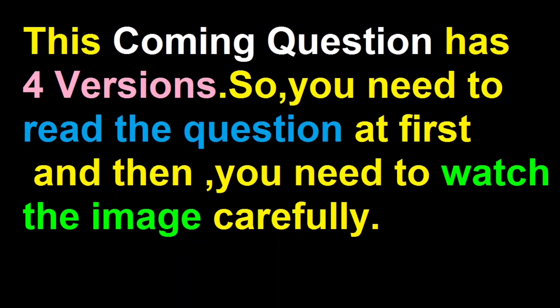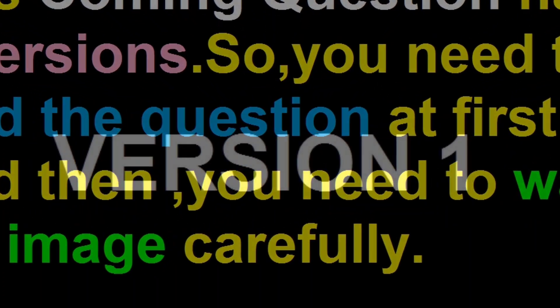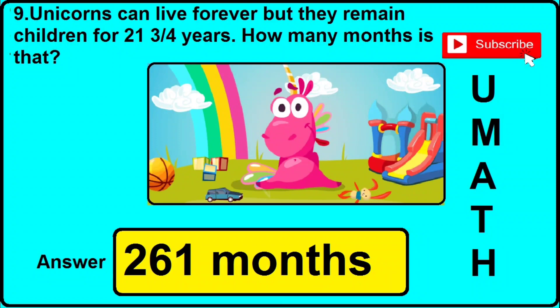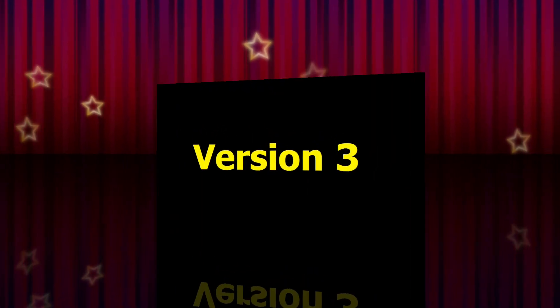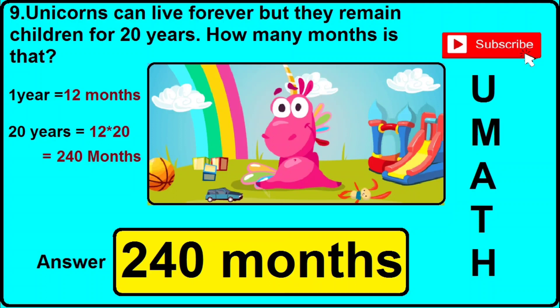The next question also has 4 different versions. Read the question first, then watch the image, then check the options. Version 1: unicorns can live forever but remain children for 21¾ years — how many months is that? The correct answer is 261 months. Version 2: unicorns remain children for 261 months — how many years? The correct answer is 21¾ years. Version 3: unicorns remain children for 20 more years — how many months? The correct answer is 240 months.